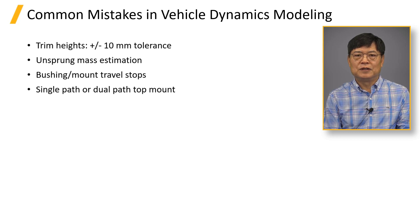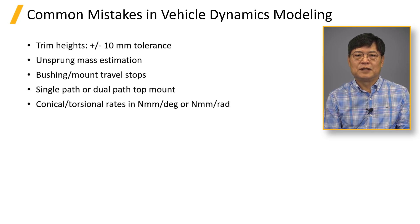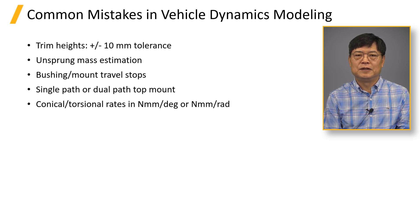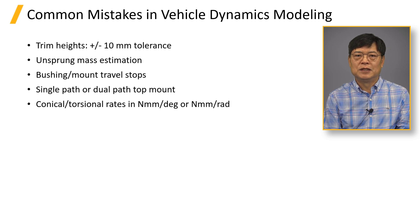Confusion in units is another easy mistake, especially between degree and radian. Many engineers are not familiar with conical rates and thus easily use radian units. I saw many cases where the conical rate of steering gear mounts is in Nm per radian. Then the steering gear becomes very compliant and the rack travel does not steer the vehicle properly.